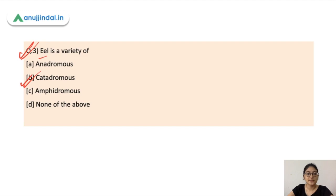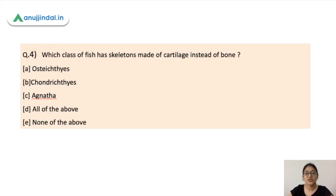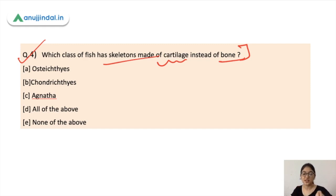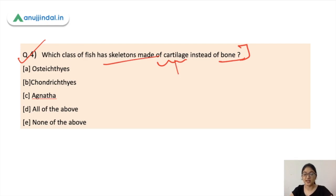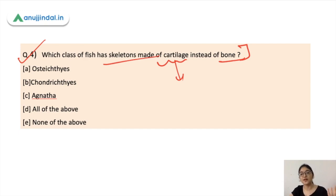The next question is: which class of fish has skeletons made of cartilage instead of bone? Cartilage is a connective tissue that is softer and more flexible than bone — you can see it in human body joints. The options are Osteichthyes, Chondrichthyes, Agnatha, all of the above, and none of the above. The correct answer is B — Chondrichthyes. Osteichthyes are bony fish with skeletons made of bone.